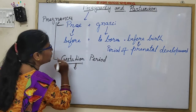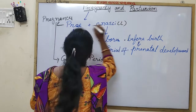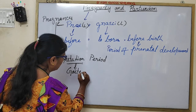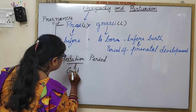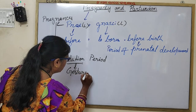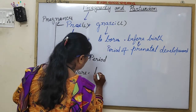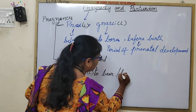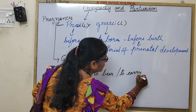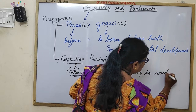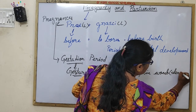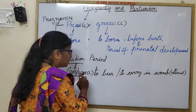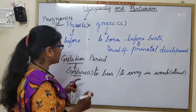Gestation is derived from the Latin word 'gestare' (G-E-S-T-A-R-E), meaning to bear or to carry in the womb — that is, the uterus. When the mother carries the developing embryo, that period is called the gestation period.